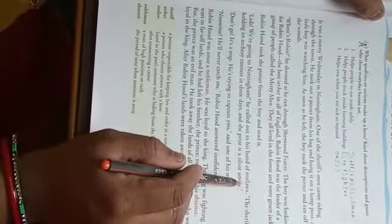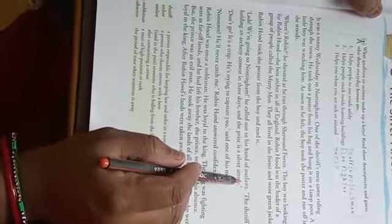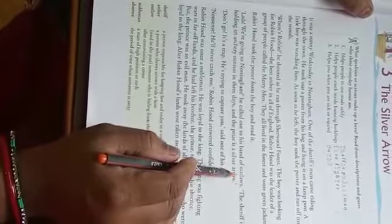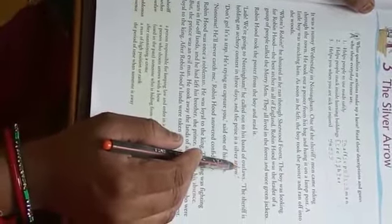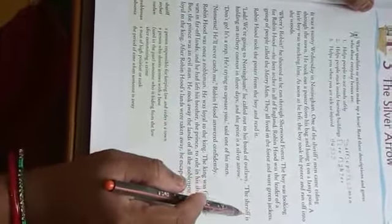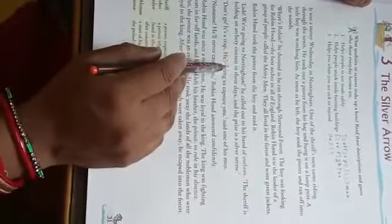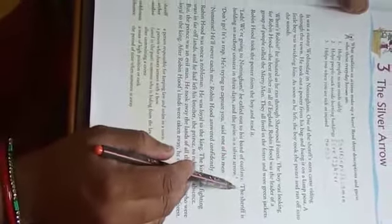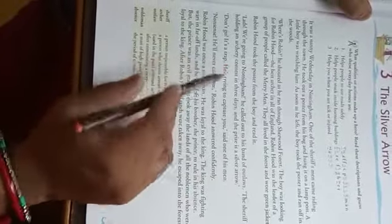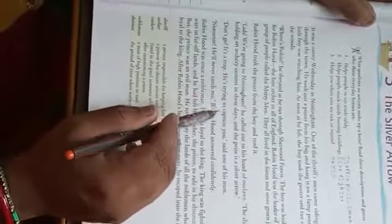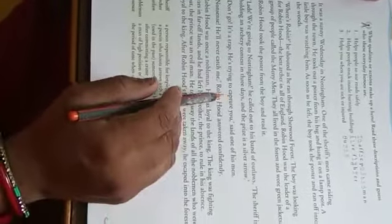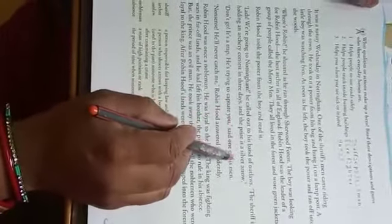Outlaws - someone who is hiding from the law after committing a crime. The sheriff is holding an archery contest in three days, and the prize is a silver arrow.